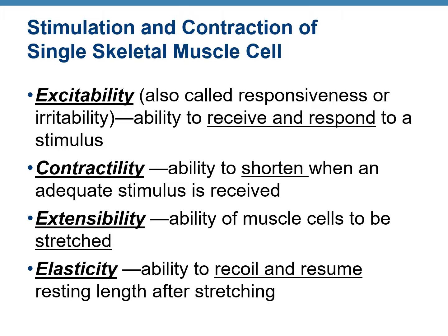Skeletal muscles are able to contract and relax because of four properties. First is excitability — the ability to receive a stimulus, a trigger or signal, and respond to it. Second is contractility — the ability to shorten after a stimulus has been received. Third is extensibility — the ability to stretch after shortening. Fourth is elasticity — the ability to recoil and resume their original length.